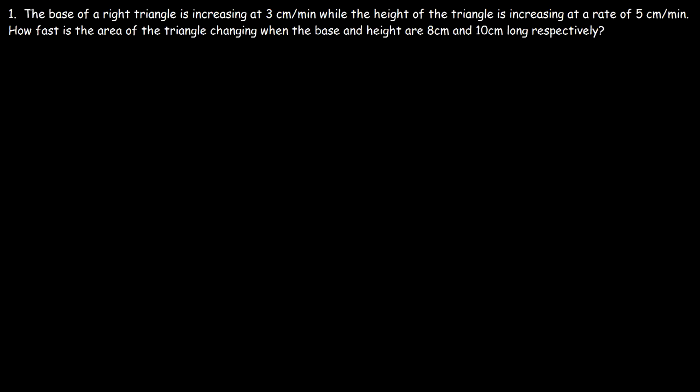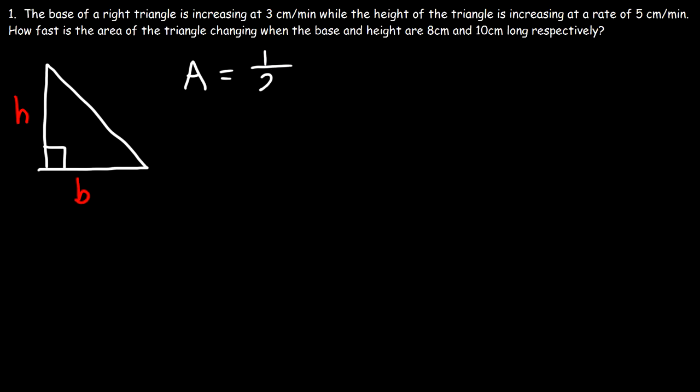The base of a right triangle is increasing at 3 centimeters per minute while the height of the triangle is increasing at a rate of 5 centimeters per minute. How fast is the area of the triangle changing when the base and height are 8 centimeters and 10 centimeters long respectively? So let's draw a picture. Here we have a right triangle — this is the base and this is the height. The area of the right triangle is simply one-half base times height.